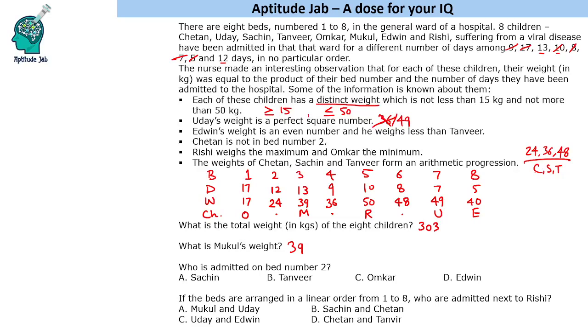Now we have Chetan, Sachin and Tanvir. Chetan is not in bed number 2 and Edwin weighs less than Tanvir. So Tanvir will weight 48. Tanvir's weight is 48. Chetan is not in bed number 2. So this will be Chetan and this will be Sachin.